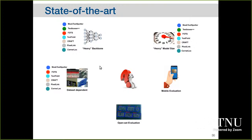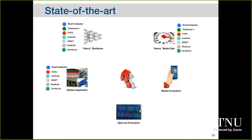These methods are mostly data-dependent, requiring specific image sizes. None of them was evaluated in a mobile environment, and none takes into account the open set problem. With this, the objective of our research is to propose efficient and effective tiny network approaches for multilingual, multi-oriented text detection, with a special focus on architectures oriented to mobile devices — looking for architectures for direct execution on mobile devices and compression approaches to get an even more compact model.